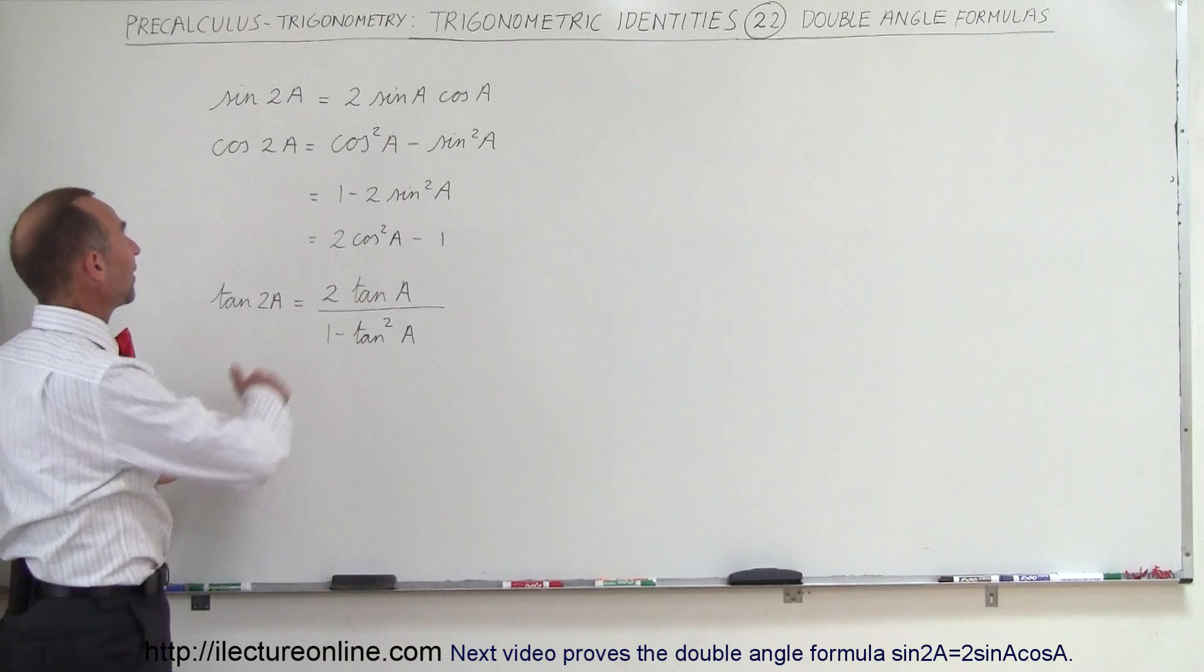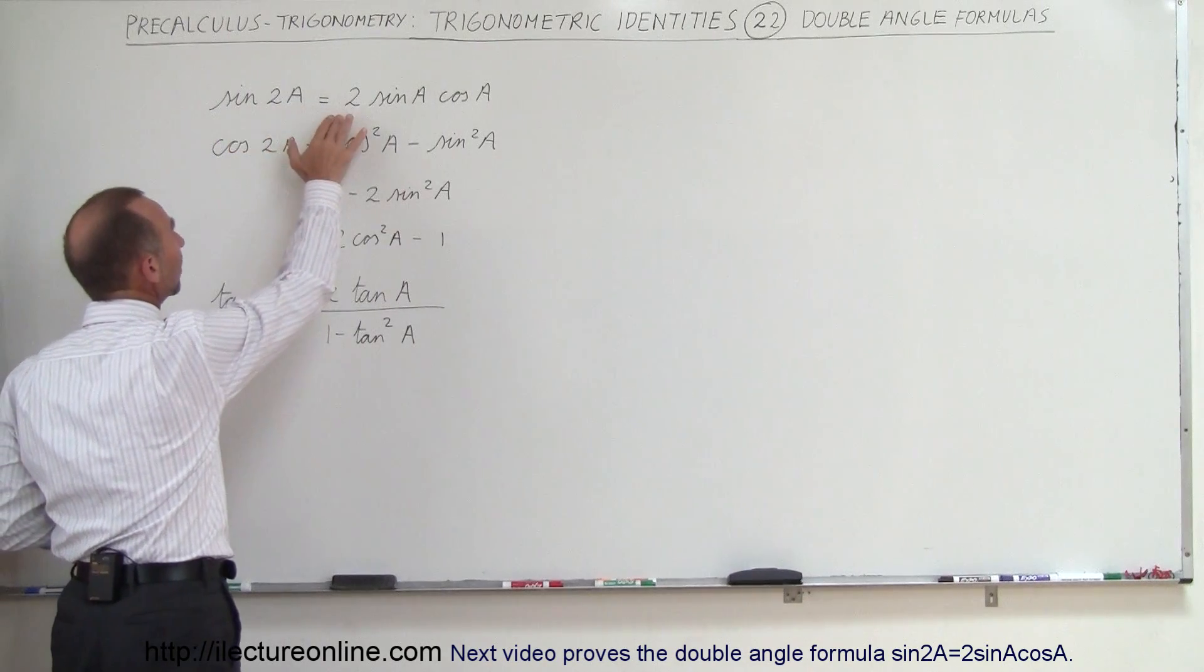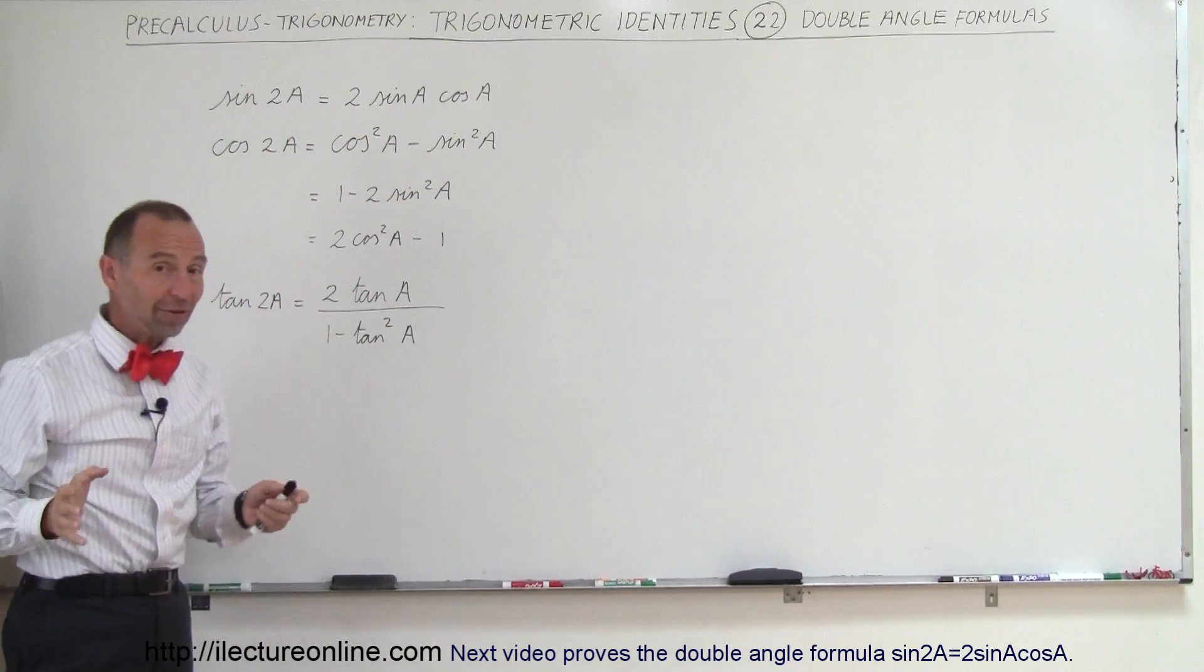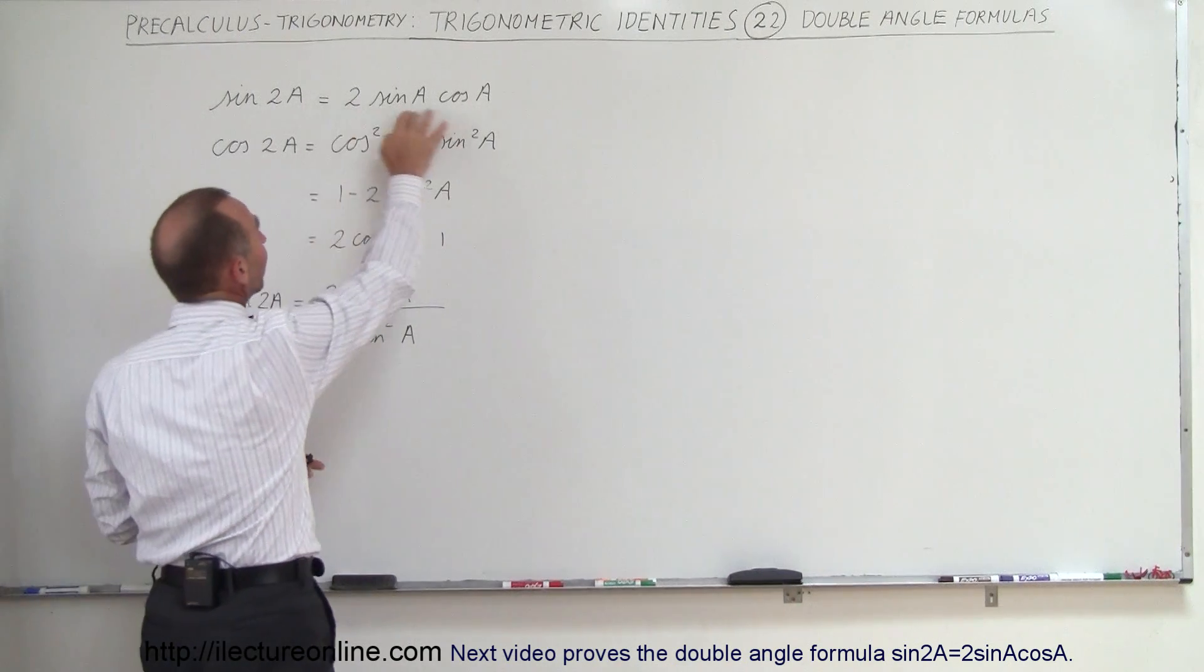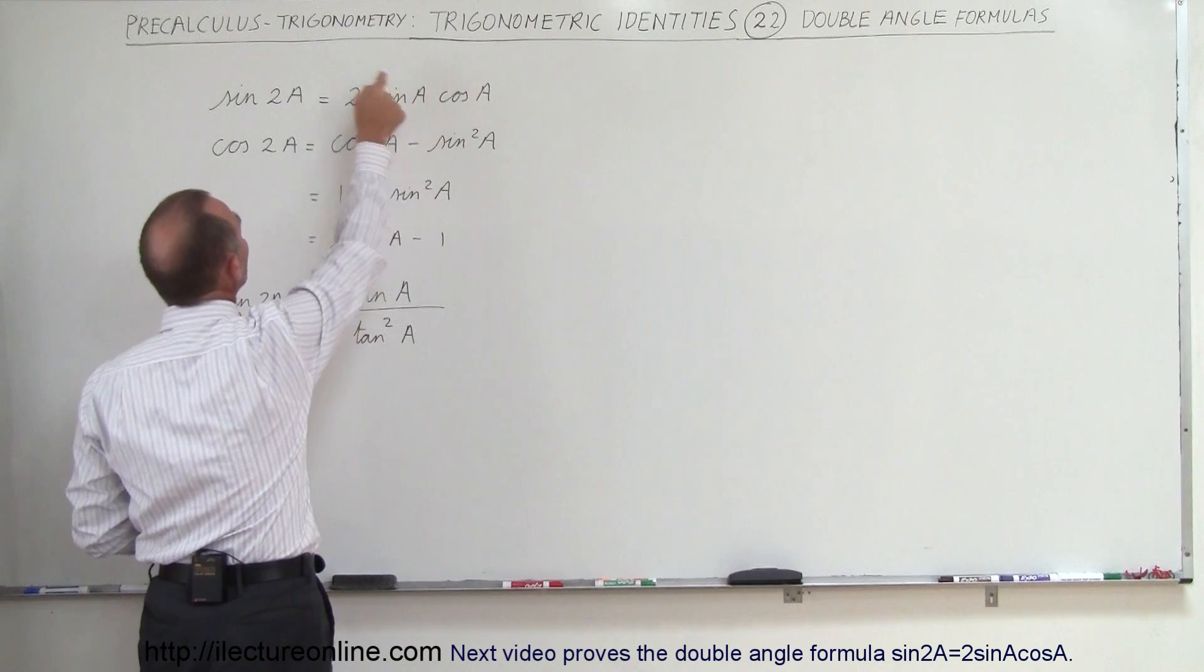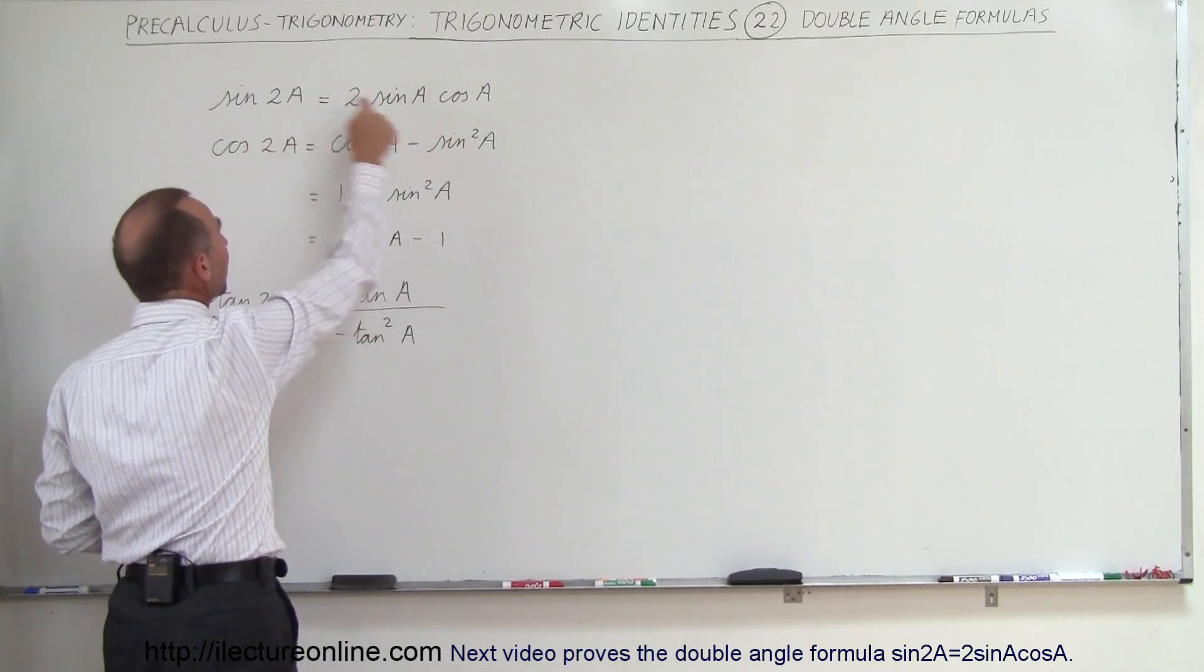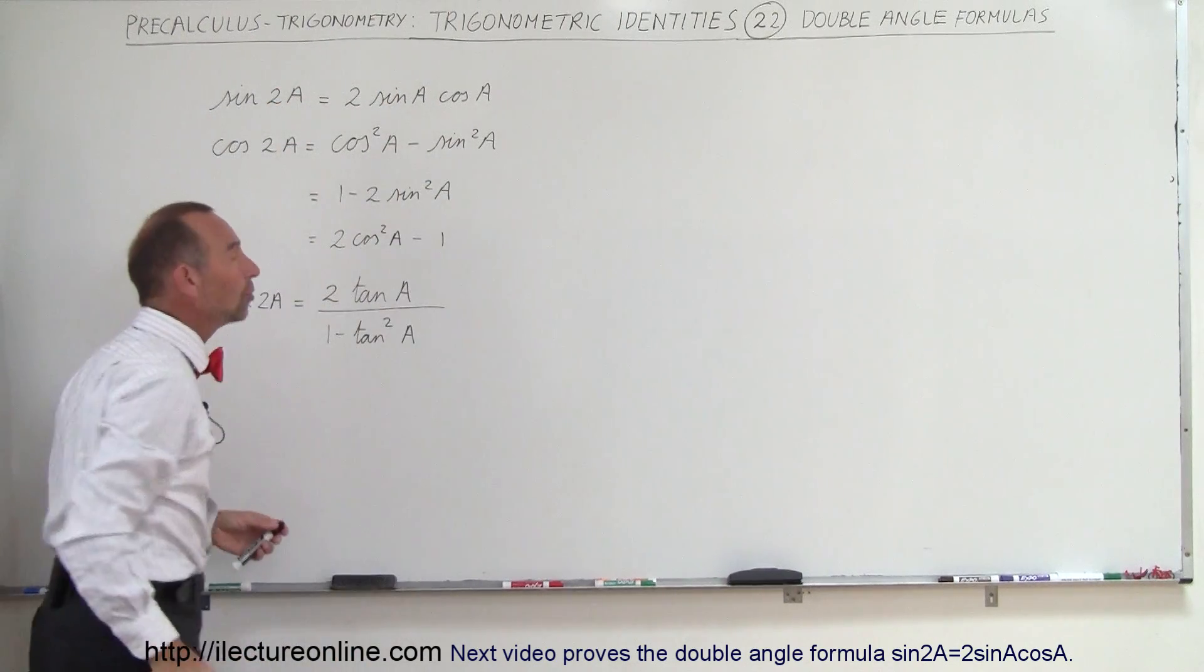So instead of having sine of 2A, we can write it as 2 times sine of A times cosine of A. Now quite often it's useful in the other direction. Sometimes you have something that looks like this and it's very handy to be able to rewrite it like that. So we need to be able to go back and forth between these two.